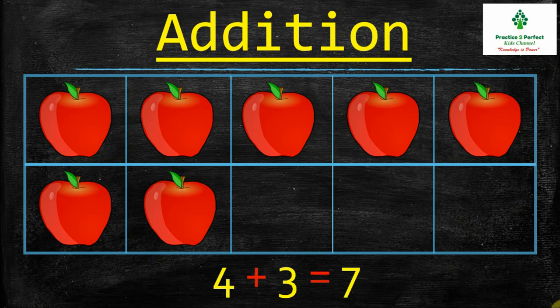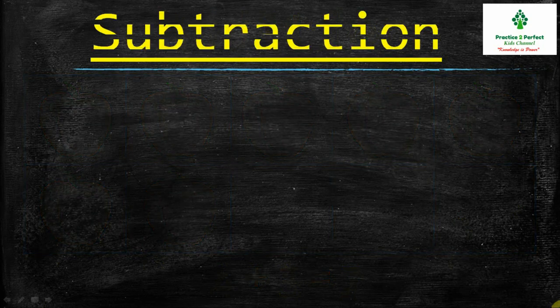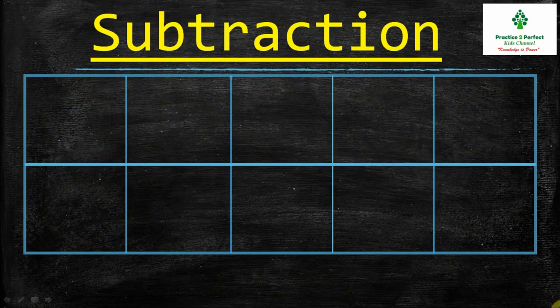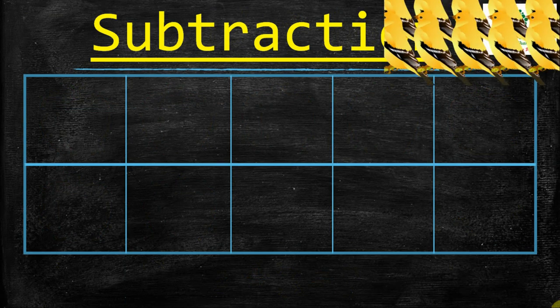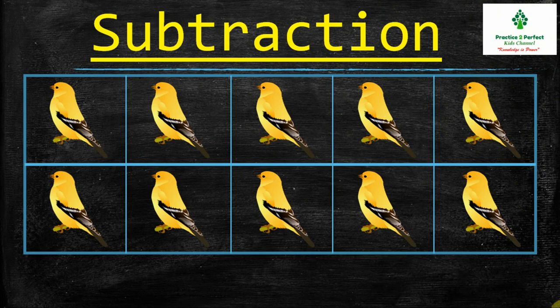Let us move and see another example, and this is for subtraction. This ten frame shows 10 birds. Now if 2 birds flew away, then how many birds will remain is the question.